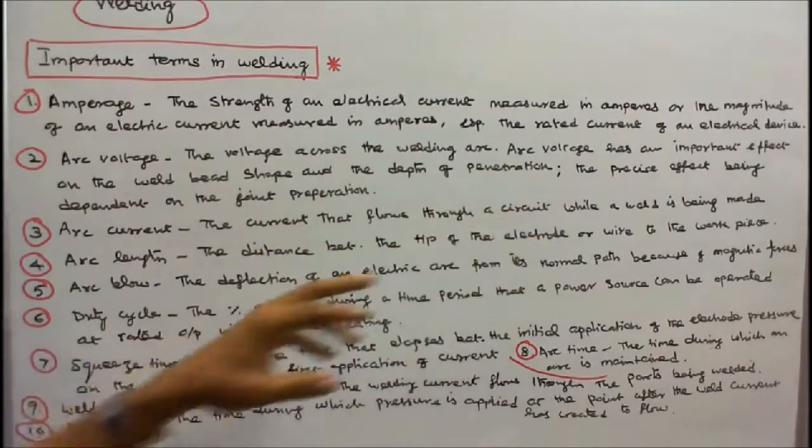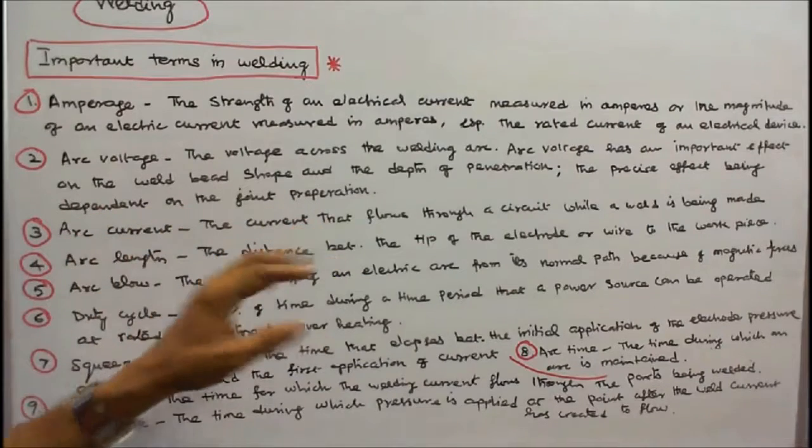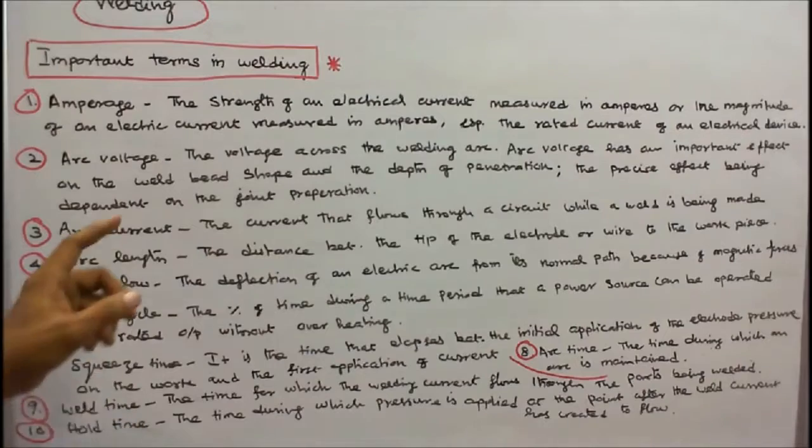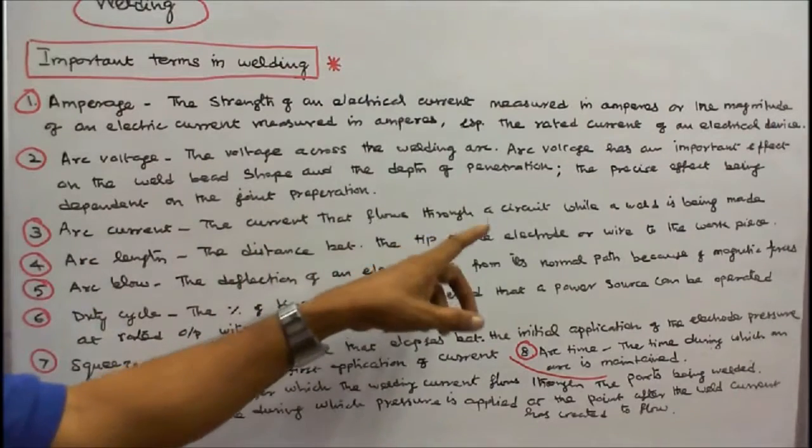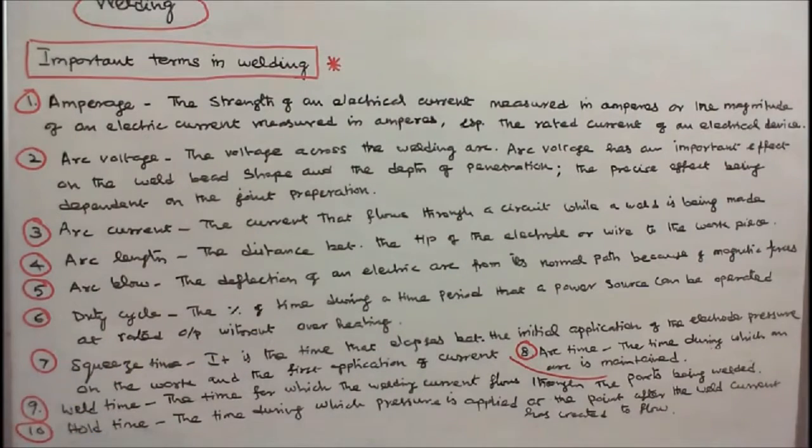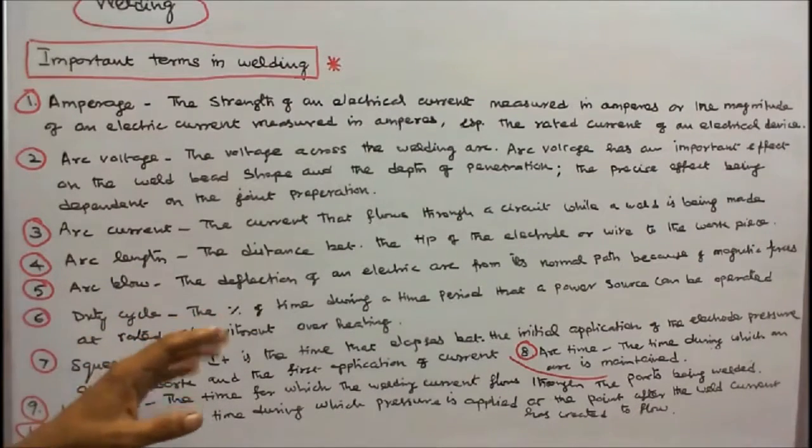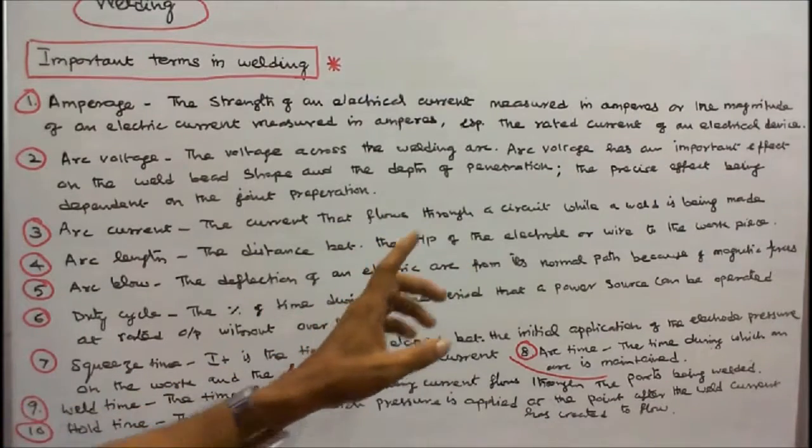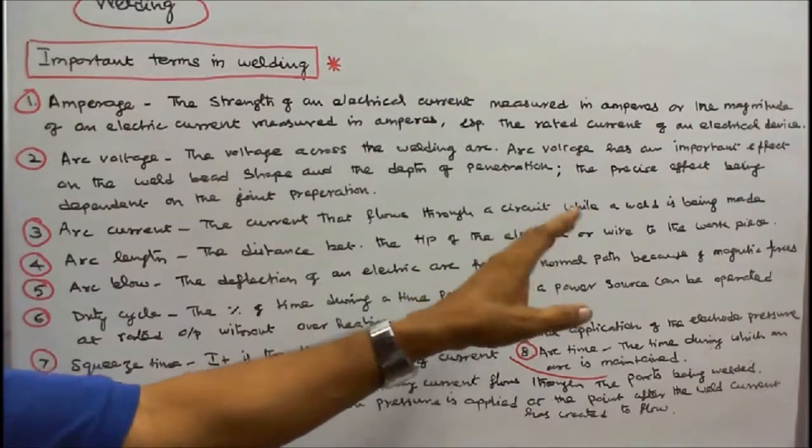Number three, arc current: the current that flows through a circuit while a welding is being made. Number four, arc length: the distance between the tip of the electrode or wire to the workpiece.